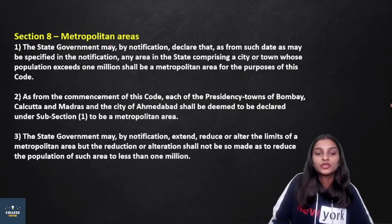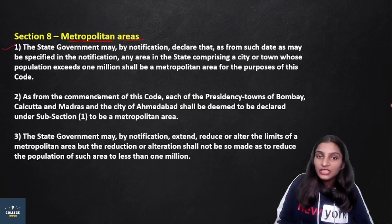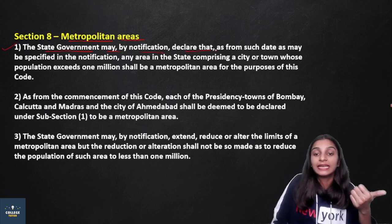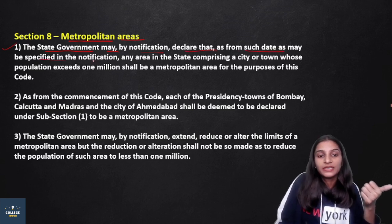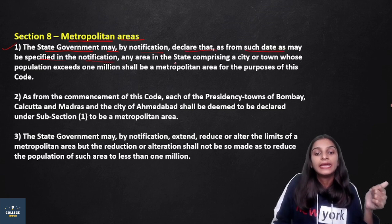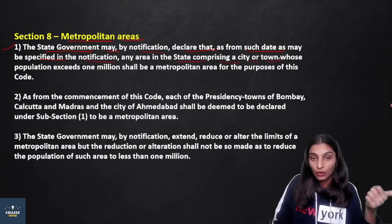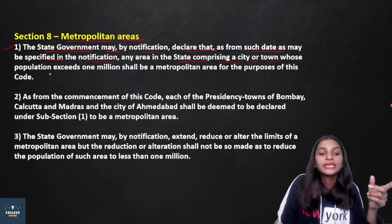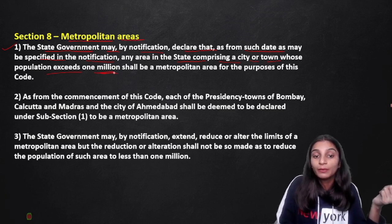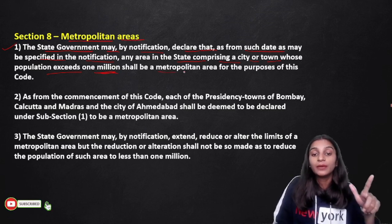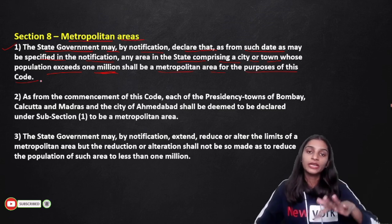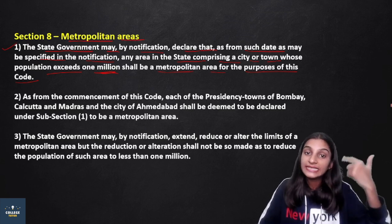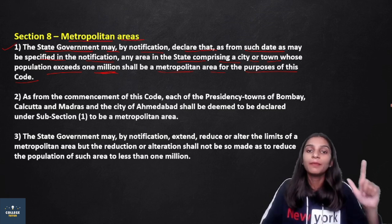Section 8 deals with metropolitan areas. Subsection 1 states that the state government may, by notification, declare that as from such date as may be specified in the notification, any area in the state comprising a city or town whose population exceeds 1 million shall be a metropolitan area for the purposes of this code.